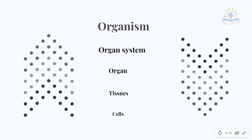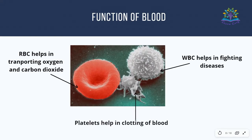Now let's consider some of the functions of blood. Transportation of oxygen and carbon dioxide is done by red blood cells. Clotting of blood in case of injury is done by platelets. White blood cells help our body to fight against diseases.